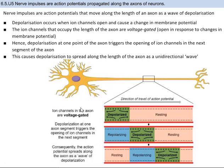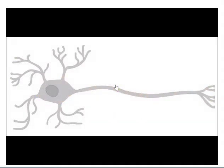Depolarization triggers depolarization of the next axon segment, propagating along the entire axon in a wave. Once an area gets depolarized, it enters a recovery phase called the refractory period, during which it repolarizes. When a region is in the refractory period, it's unable to generate a new action potential, and then eventually returns to resting potential. This is the reason the wave only moves in one direction. The propagation goes from dendrite to cell body, down the axon, to the axon terminal.